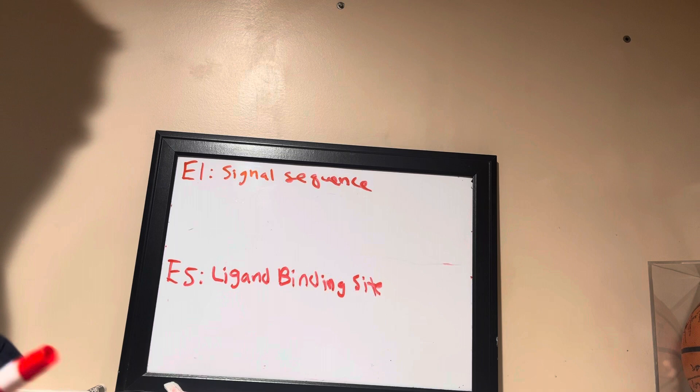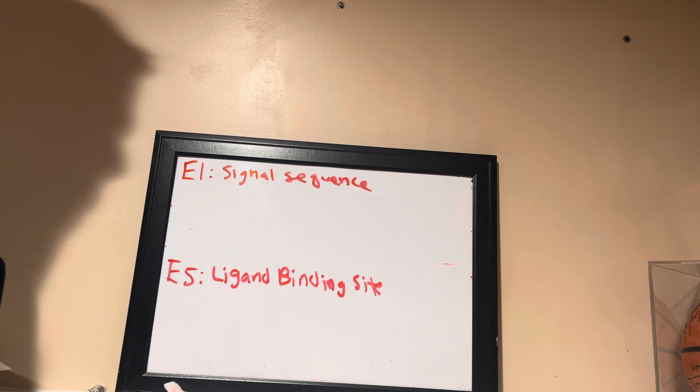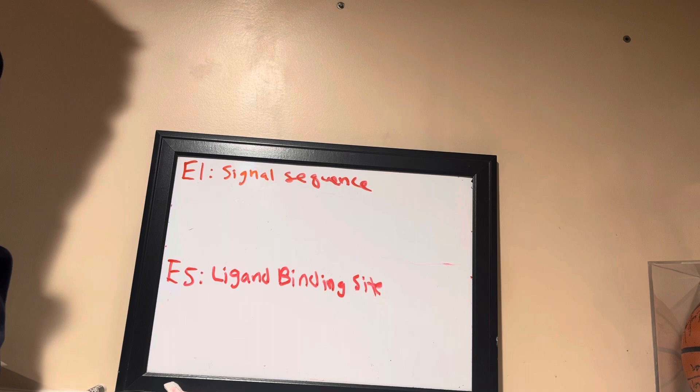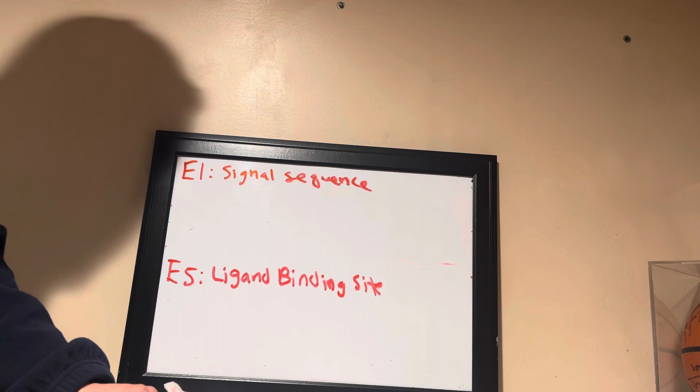We're going to talk about two specific mutations that could occur in the LDL receptor gene, and how those two specific mutations will affect specific cell processes. The first one we're going to look at is the mutation or deletion of exon 1 of the LDL receptor gene, which encodes the signal sequence for the LDL receptor.